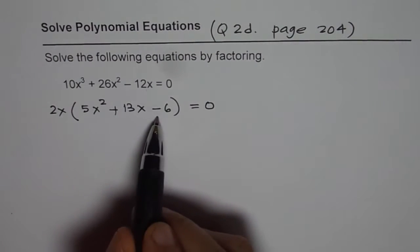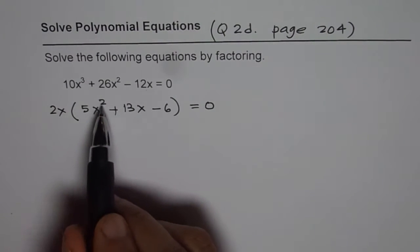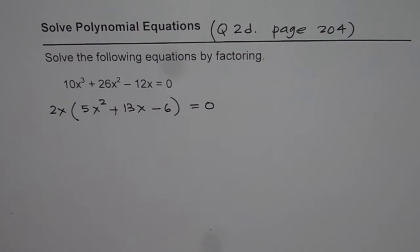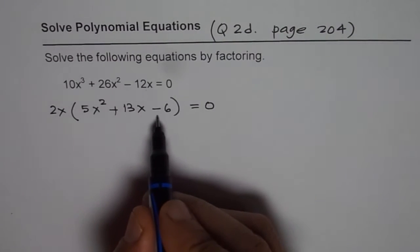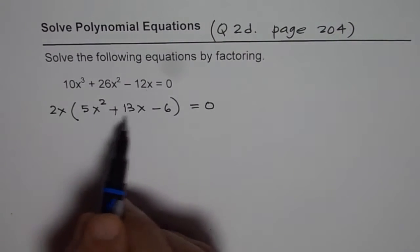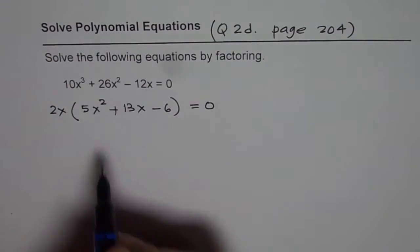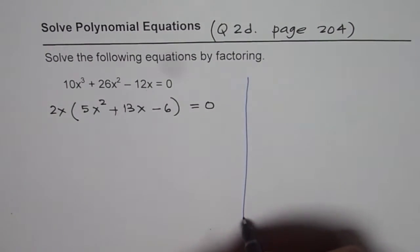Now, we have a quadratic trinomial here, 5x squared plus 13x minus 6, which we can factor using product and sum. So, let me factor this separately and then we will write down the factor here. So, let me do it on this side.